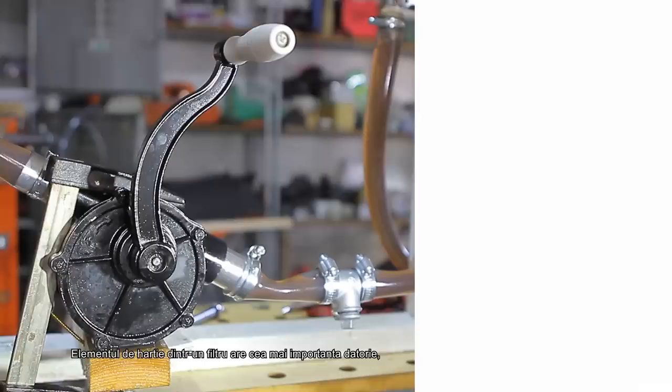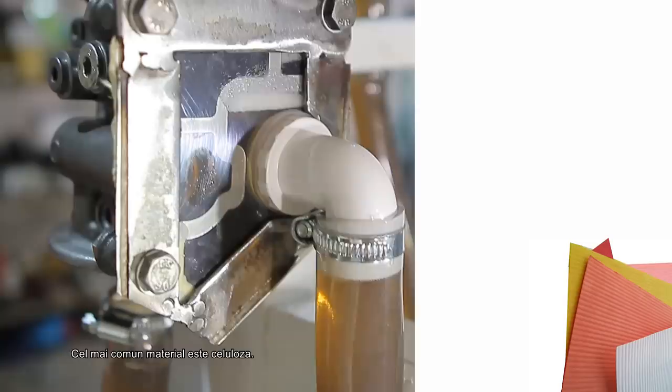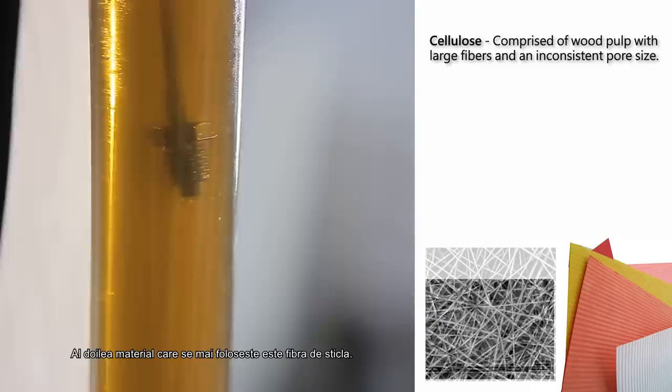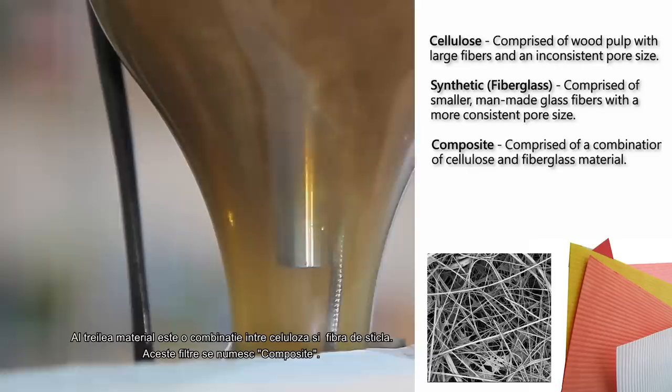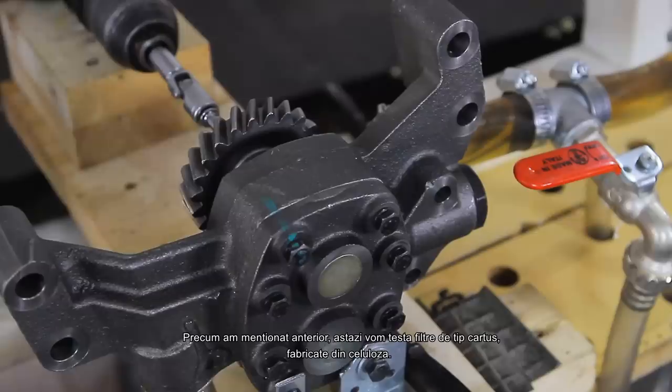The paper element inside the filter serves the most important role and this can be made out of three materials. The most common is cellulose. These are easier to produce but can have larger gaps between the fibers through which particles can escape. The second material used is glass fibers. These are more expensive but the gaps are more consistent and smaller in size. Usually the glass fiber filters are more effective than cellulose filters. The third type is a combination of both and are known as composite filters. As mentioned the filters that we'll be testing today are cartridge filters based on a cellulose construction.